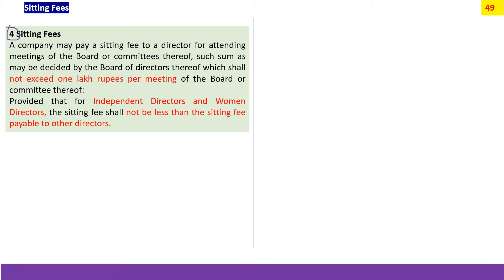Rule pertaining to sitting fees makes three main points: the amount of sitting fee paid should not exceed one lakh rupees per meeting, the sum may be decided by the board of directors, and there should be no discrimination in the amount of sitting fee between independent directors, women directors, and other directors.